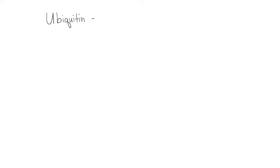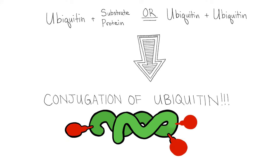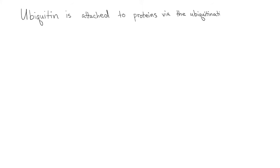The attachment of ubiquitin to either a substrate protein, or to another ubiquitin, is termed the conjugation of ubiquitin. You can even have ubiquitination on several lysine residues on a protein simultaneously. However, this is not necessary for the proteasome to then target the protein.